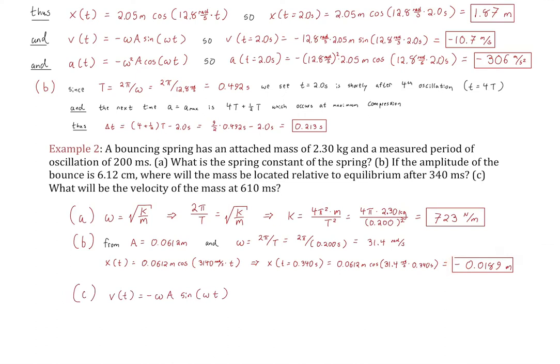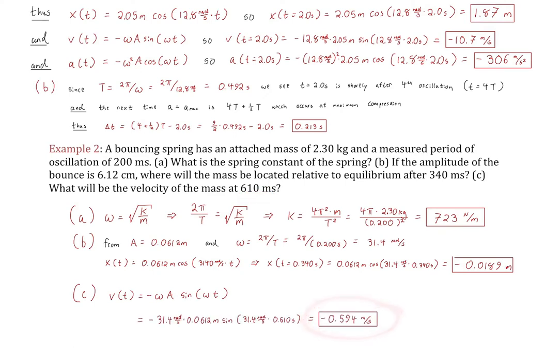Part C: What will the velocity be at 610 ms? Simply plug t = 0.610 s into v(t) = −ωA sin(ωt) to get another value — also negative. That's a different time from part B, so the sign will differ accordingly.